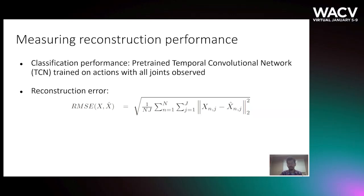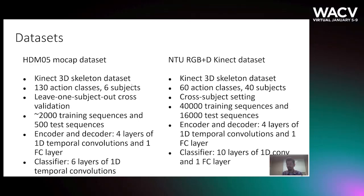We measure reconstruction performance in two ways: the usual L2 error, also called the RMSE error, as well as the classification performance on a pre-trained deep classifier which was trained on actions where all the joints were observed. We perform our experiments on two publicly available datasets: the HDMO5, which is a mocap medium-sized dataset, and also the NTU Kinect dataset, which is a large-scale database.